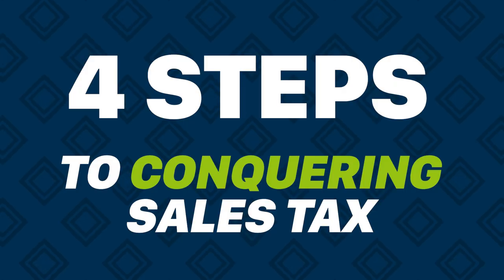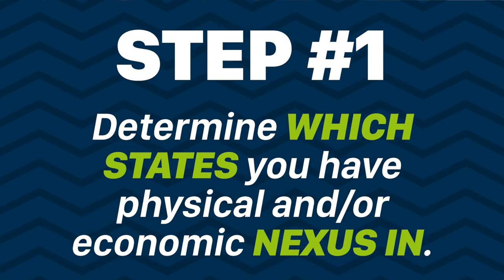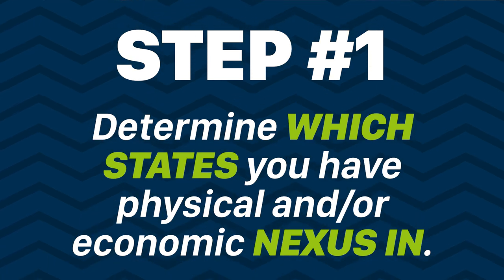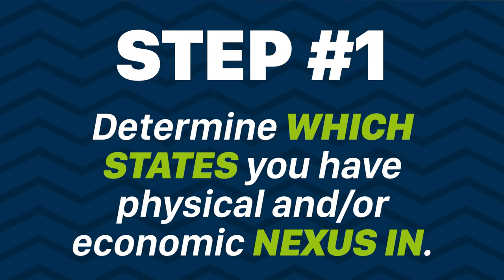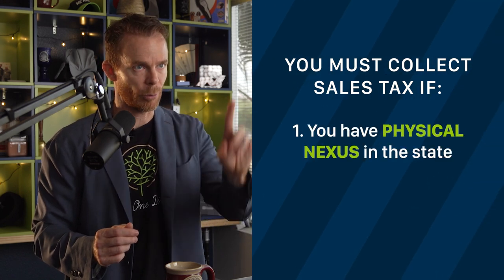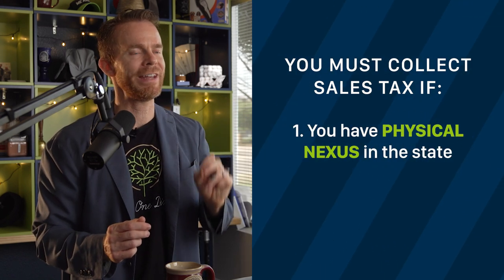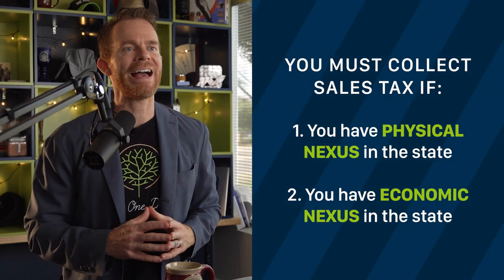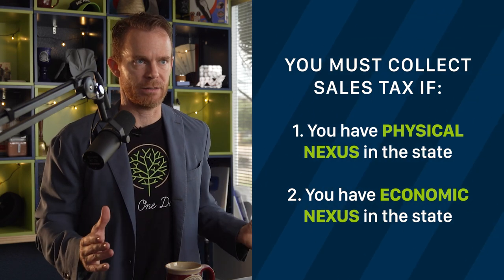Four steps to conquering sales tax. Step one: determine which states you have physical and/or economic nexus in. If either of the following are true, you must collect sales tax. Number one: when you have physical nexus in the state — in other words, when your business, employees, or products are physically present in that state. Number two: when you have economic nexus in that state — in other words, when you reach a minimum amount of annual sales in that state. Remember, Alaska, Delaware, Montana, New Hampshire, and Oregon do not collect state sales tax.